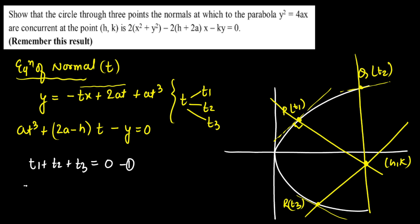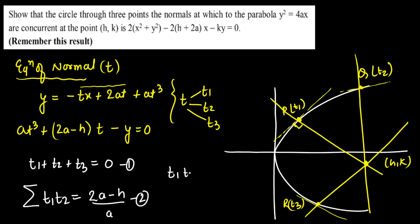From the cubic at³ + (2a − h)t − k = 0, the second result is the sum taken two at a time: t1t2 + t2t3 + t3t1 = (2a − h)/a. The third result is the product: t1·t2·t3 = k/a. These three relations will be used in the next steps to find the equation of the circle.